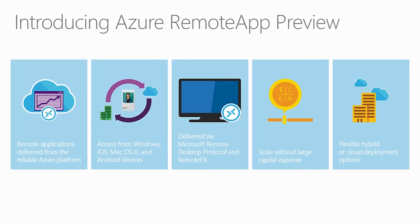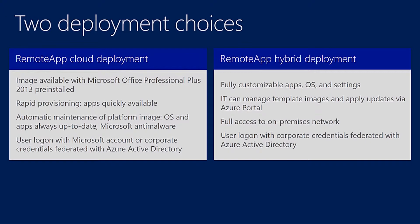This allows us to provide the flexibility of either a hybrid or a cloud deployment model. There are two different deployment methods. We can deploy Remote App to a complete cloud-based deployment, leveraging Microsoft's pre-created images that include things like Office 365 and other core applications. The benefit here is rapid provisioning because these images are already based in a specific gallery offered up to users.